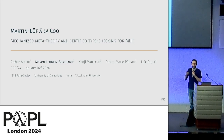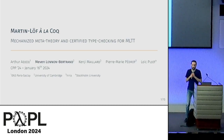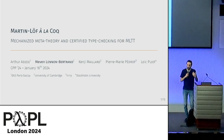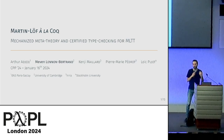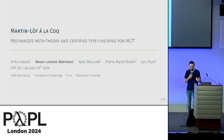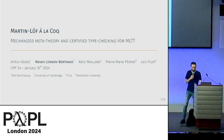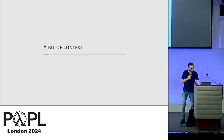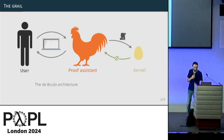This is your typical vanilla dependent type theory, and what we want to go towards here is obtaining certified type checkers — something good that we can actually run at the end of the day.